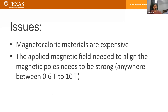However, there are some issues with magnetocaloric materials and devices. They're significantly more expensive right now — many of the alloys use rare earth metals, which are very expensive compared to other materials. Additionally, the applied magnetic field has to be very strong, and that's an issue because you can't just use a permanent magnet to generate something like two or three tesla — you have to engineer something capable of generating that level of magnetic field.